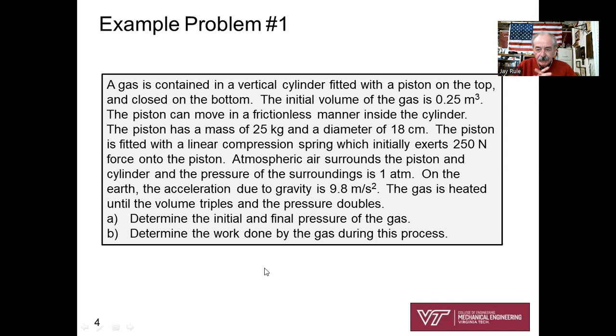Let's look at the problem statement. A gas is contained inside a vertical cylinder fitted with a piston on top and closed on the bottom. The initial volume of the gas is 0.25 cubic meters. The piston can move in a frictionless manner inside the cylinder. The piston has a mass of 25 kilograms and a diameter of 18 centimeters. The piston is fitted with a linear compression spring which initially exerts 250 newtons of force onto the piston. Atmospheric air surrounds the piston and cylinder, and the pressure of the surroundings is one atmosphere. On Earth, the acceleration due to gravity is 9.8 meters per second squared. The gas is heated until the volume triples and the pressure doubles.